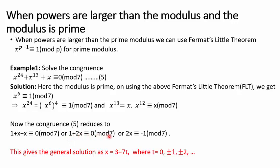We have the linear congruence 1 + 2x ≡ 0 (mod 7). Using the method for solving linear congruences (diophantine equations), the general solution is x = 3 + 7t, where t = 0, ±1, ±2, .... Setting t = 0 gives x = 3. You can verify that x = 3 satisfies the original congruence.